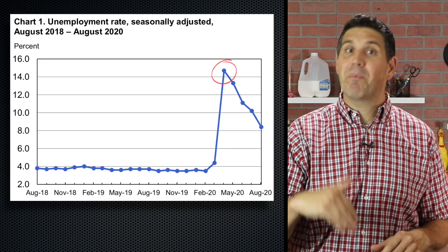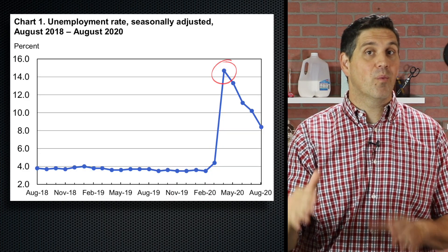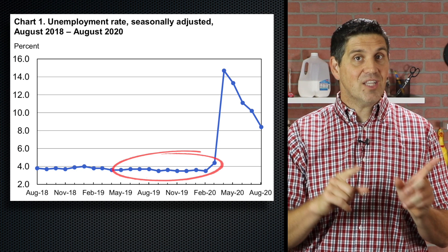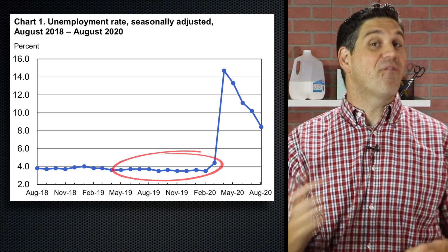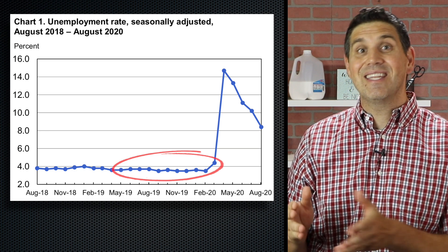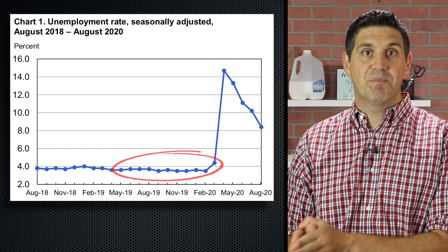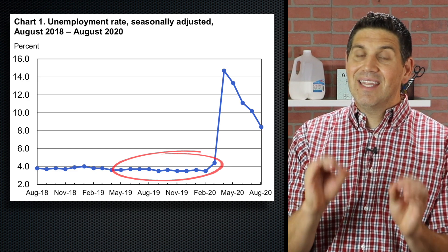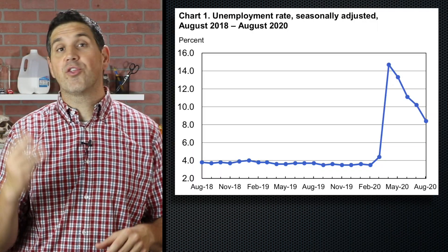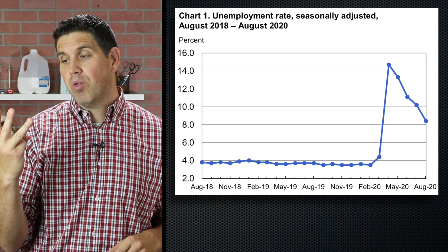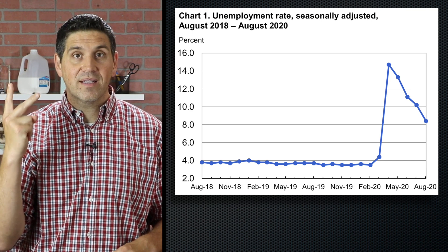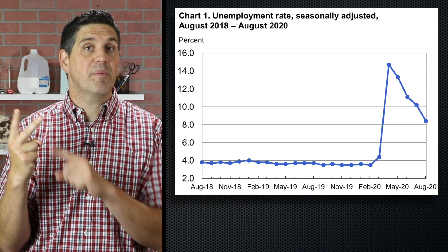This spike in unemployment was record-breaking, but so was this: before the pandemic, the U.S. had the lowest unemployment rate since the 1950s. But notice, it didn't get down to zero percent. Economists focus on three types of unemployment, and two of them always exist, even when the economy is doing great.